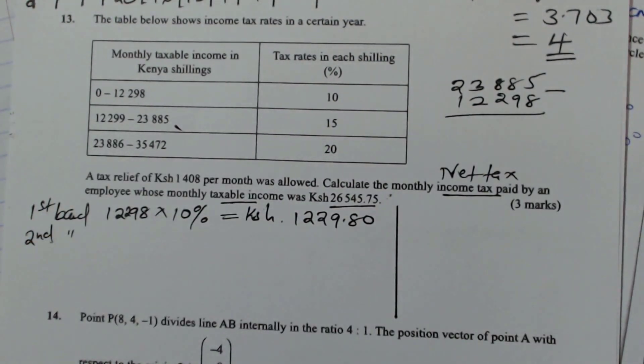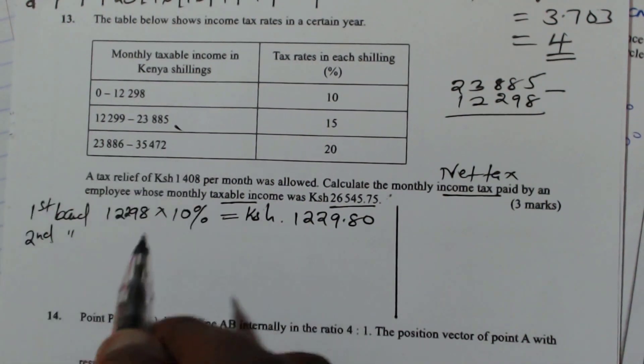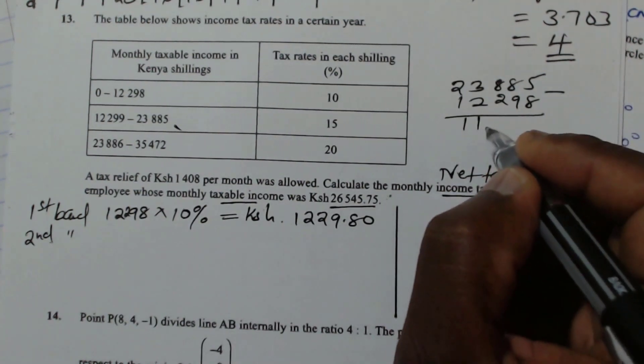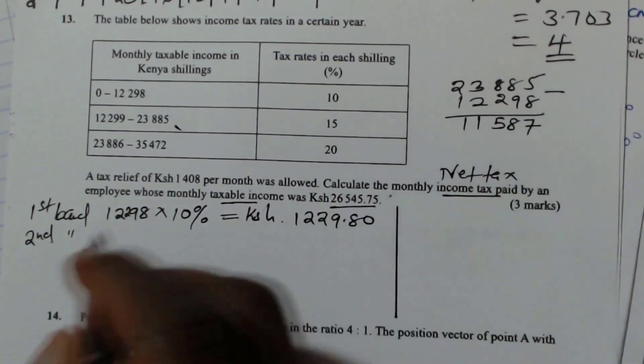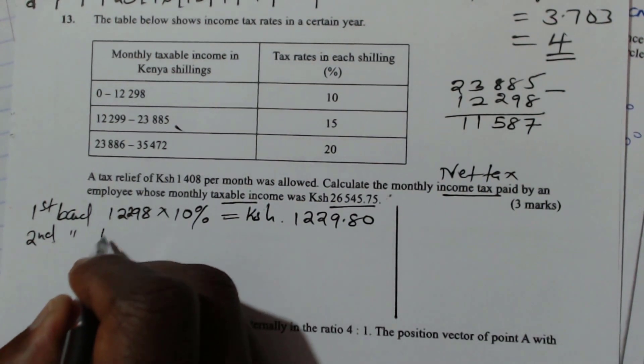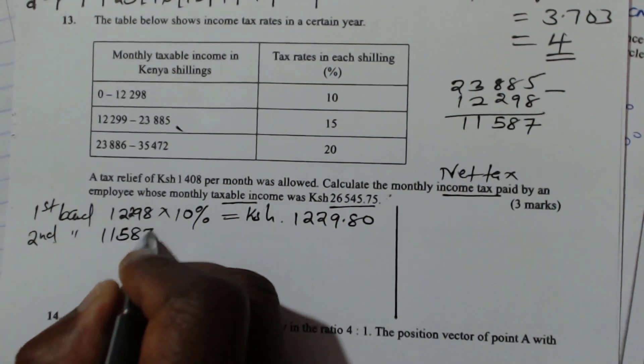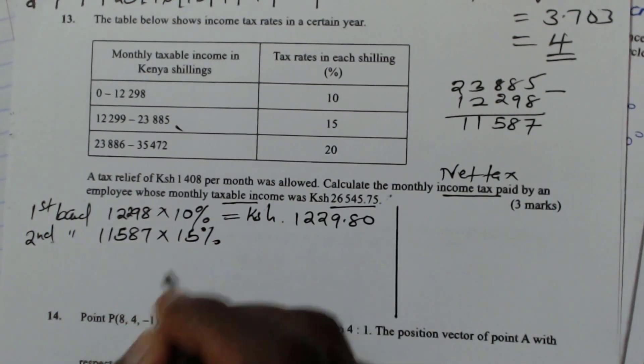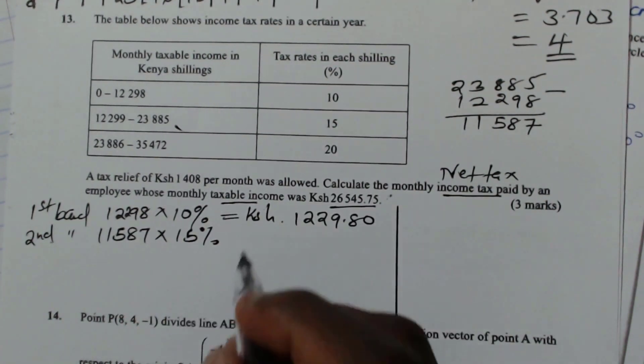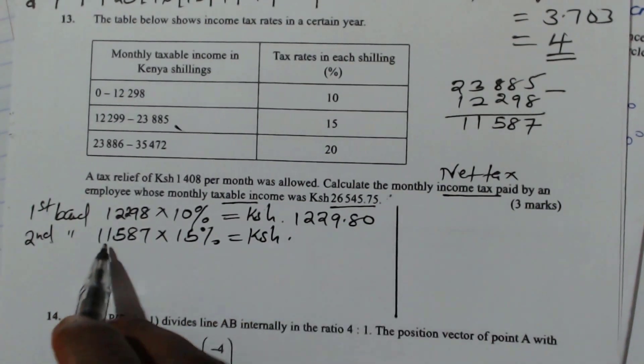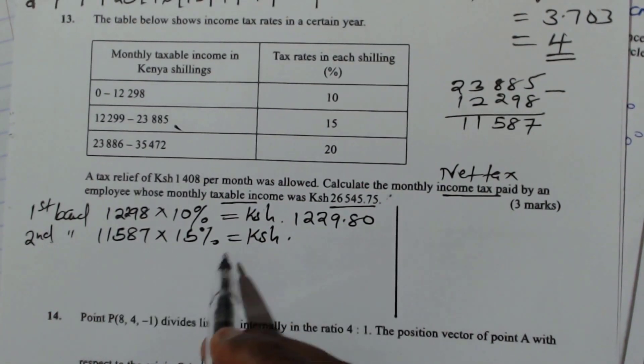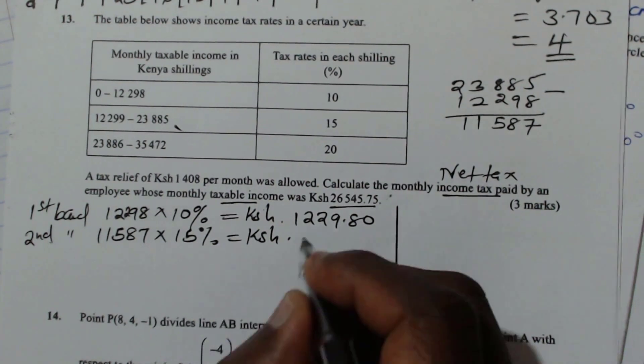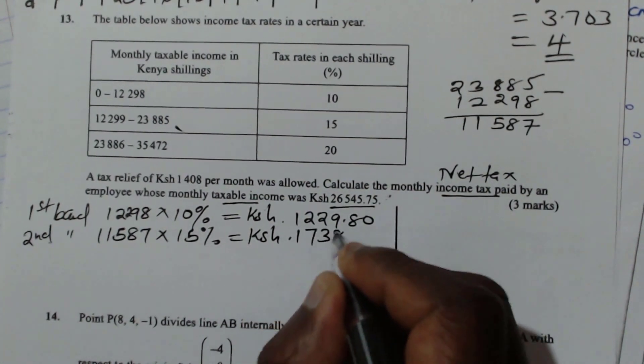So you get the amount that is taxed in that band. And you notice that one would be 11,587. So that is the second band. So 11,587, times 15%. So when you multiply this, 11,587, then 15%, we get a tax of 1738.05.